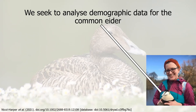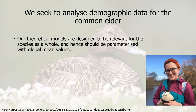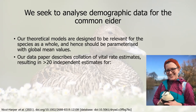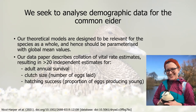In my PhD, we use population modelling to investigate breeding ecology and inform conservation of the common eider duck — a well-studied sea duck of the northern hemisphere. Our theoretical models are designed to be relevant for the species as a whole, and hence we're wanting to parameterise them with some sort of global mean values. We have a data paper describing our collation of vital rate estimates for this species, and we had over 20 independent estimates for adult annual survival, clutch size, the number of eggs laid per breeding attempt, and hatching success, the proportion of eggs producing young.